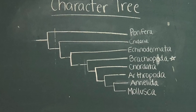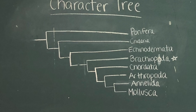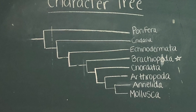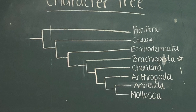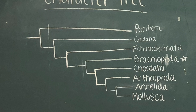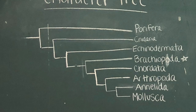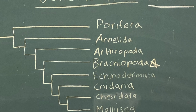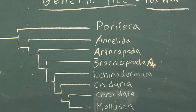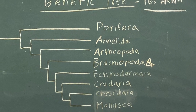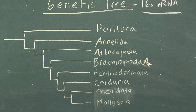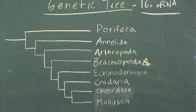By considering how a certain taxon on both the character tree and genetic tree is equally related to all taxa below it, we determined the closest relatives of Brachiopata to be Chordata and Mollusca. Chordata and Mollusca were both below the taxon Brachiopata in both trees.